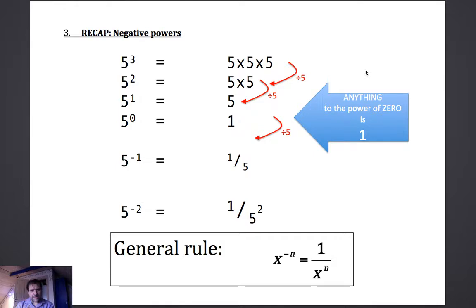Now for that pattern to continue, the next one would have to be 5 to the power of 0 is 1, because dividing the previous 5 by 5, you get 1. And that gives us one of our important rules of powers that anything to the power of 0 is 1.